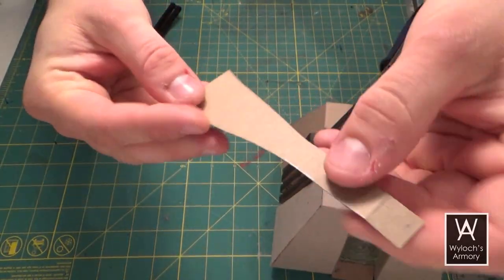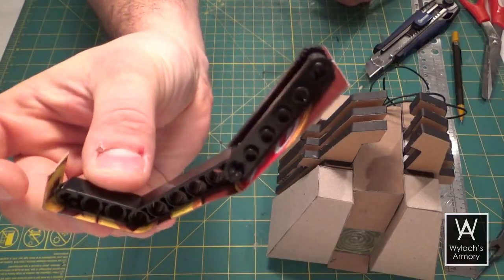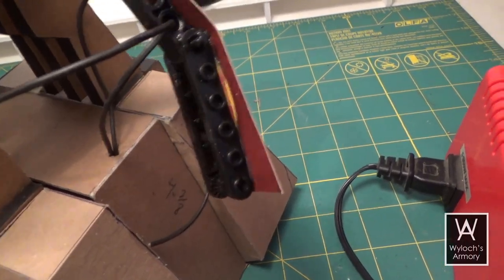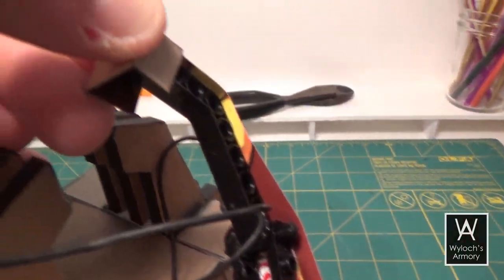Hot glue a strip of cereal box to that. Then I realized that the holes in these pieces would be a neat opportunity to intertwine the wires through, so I did that.